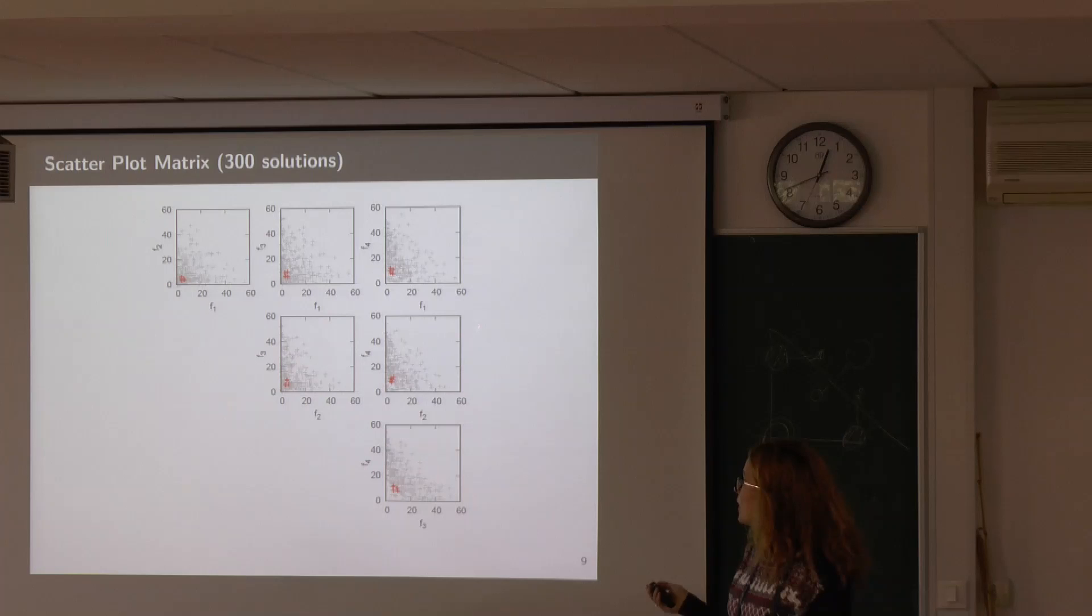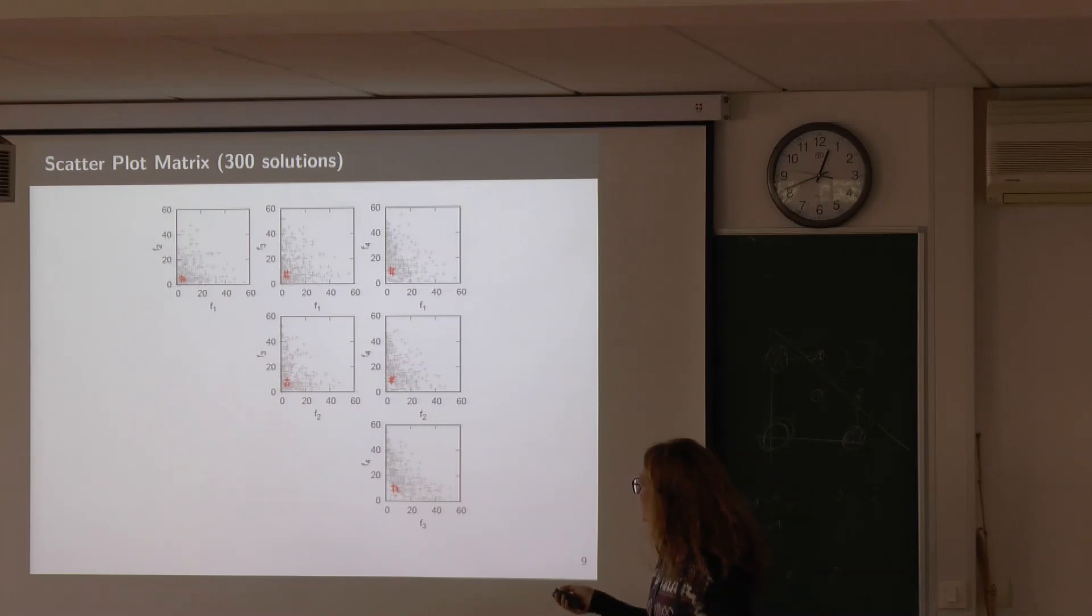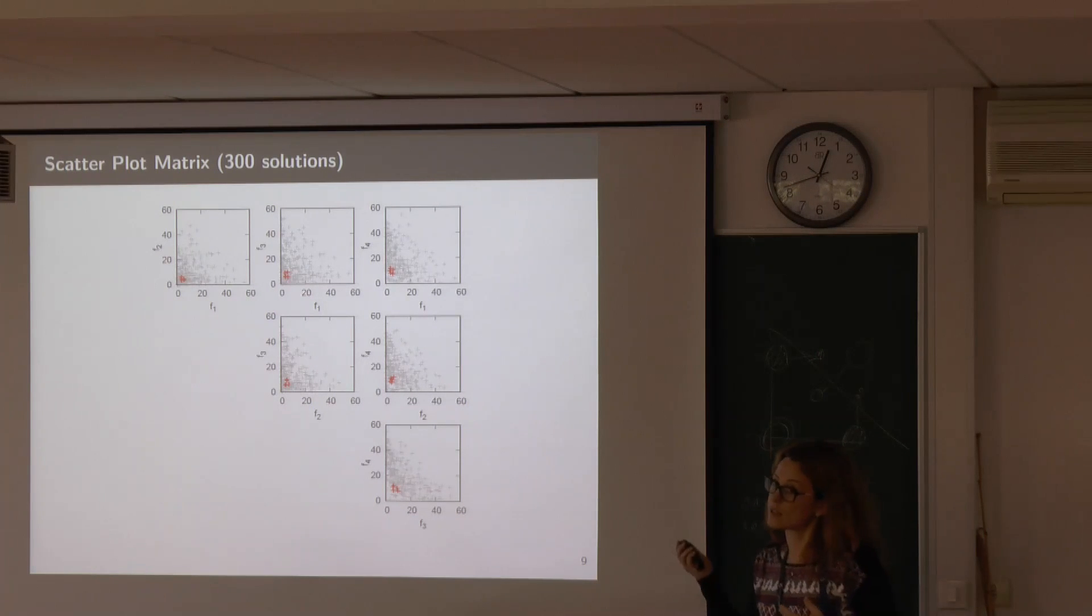Let's see how the methods are doing. First, we have the scatter plot matrix, which is a very simple visualization method. We have the four-dimensional objective space and we just project it to every possible projection on two-dimensional space. Any gray point is one of the 300 points we had in the Pareto front approximation and the red ones are those that are at the knee. What you can see here is that you can kind of infer these red points have very low values in all of the four objectives, but you cannot say anything about the shape. You cannot see the knee. If those points were gray, you couldn't differentiate them in any way from the rest. So this is not doing very well.